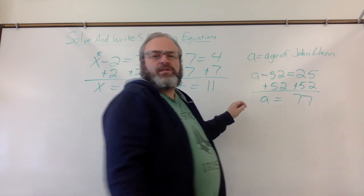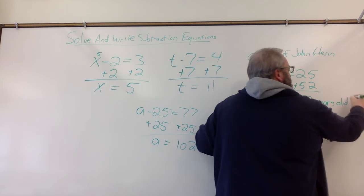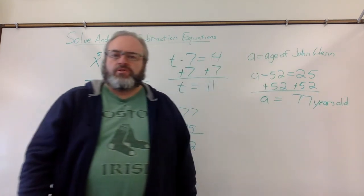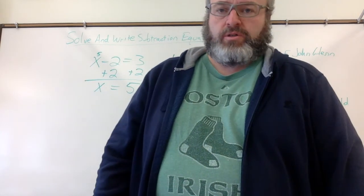We need a label for that. 77 what? Years. John Glenn was 77 years old and he became the oldest person ever to go to space.